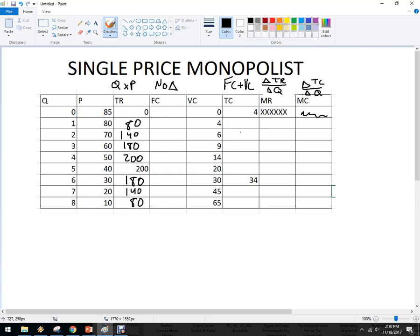Fixed costs. Well, let's see what it is. So if the variable cost is zero and the total cost is four, then the fixed cost must be four. Because this was zero. And so it's $4 all the way down. So this is 8, this is 10, 13, 18, 24, okay.